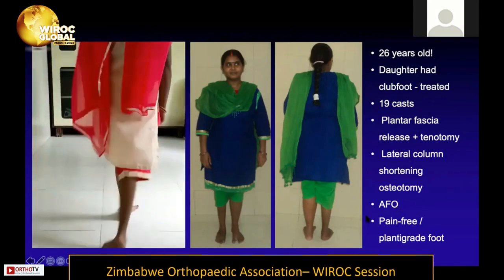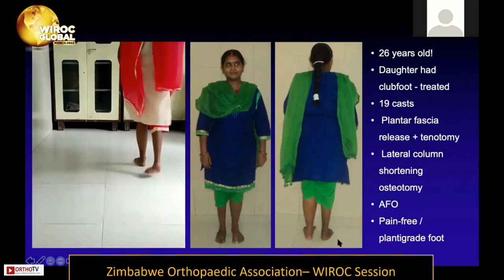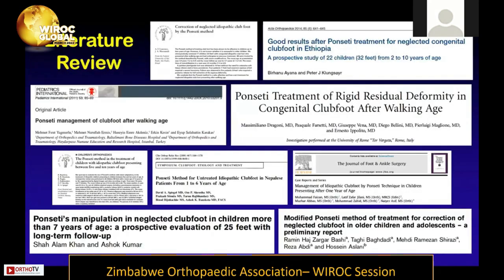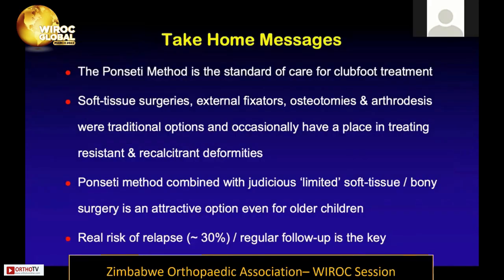To wind up: the Ponseti method is the standard of care for clubfoot. Soft tissue surgeries, fixators, osteotomies, and arthrodesis are traditional options that still occasionally have a place even in 2020 for resistant and recalcitrant deformities. The Ponseti method combined with judicious limited soft tissue or bony surgery is an attractive option even for the older child. You must be aware that the risk of relapse is high, and regular follow-up is key.